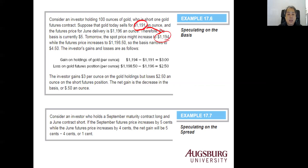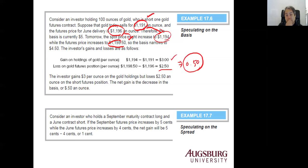Because the gold price increased by $3, you gain on holding gold. But you also have a loss on your short gold futures position because the futures price increased by $2.50. The investor gains $3 per ounce on the gold holding but loses $2.50 per ounce on the short futures position, for a net gain of $0.50. So by holding the commodity with a futures contract, you can bet on the basis — the difference in price changes between spot and futures.